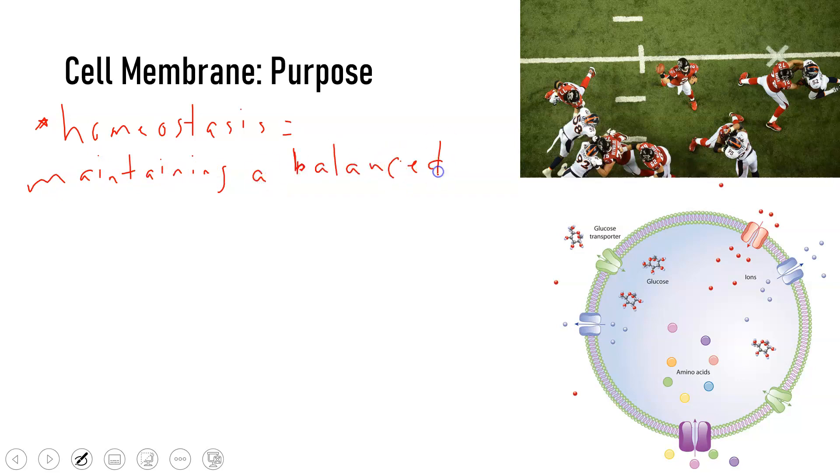One way your body maintains homeostasis is by regulating body temperature. When you get too hot, your body sweats to cool off. When you get too cold, your body shivers to warm up. We also maintain homeostasis by regulating water content, food, and waste. In the same way, the cell membrane helps maintain this balanced internal environment in the cell.